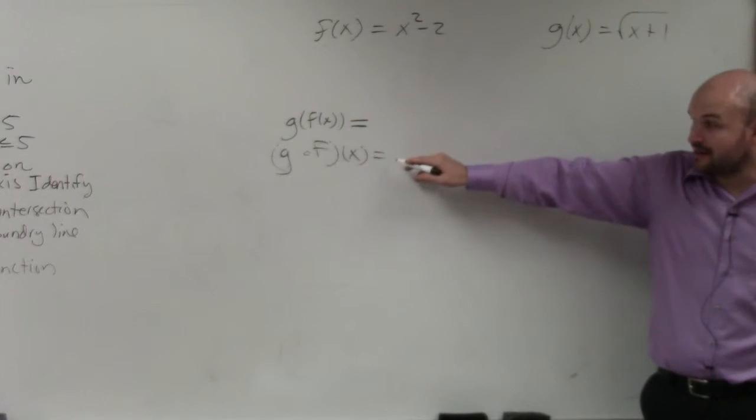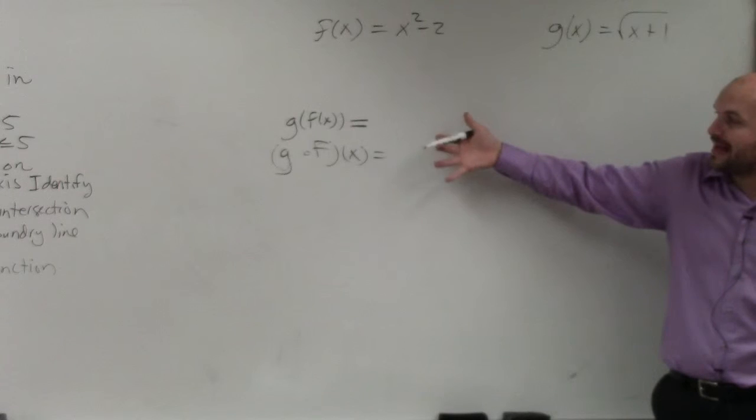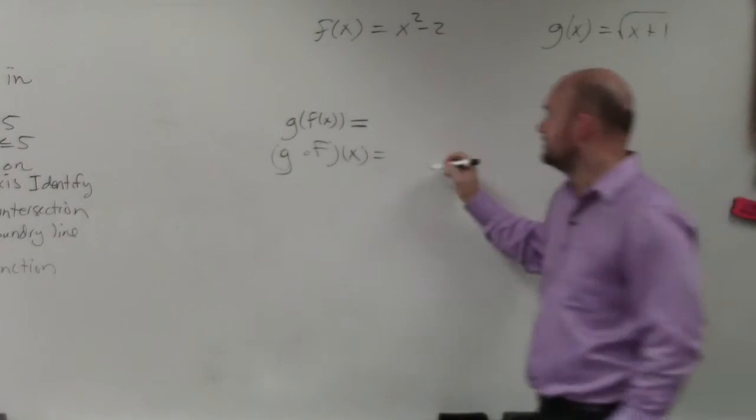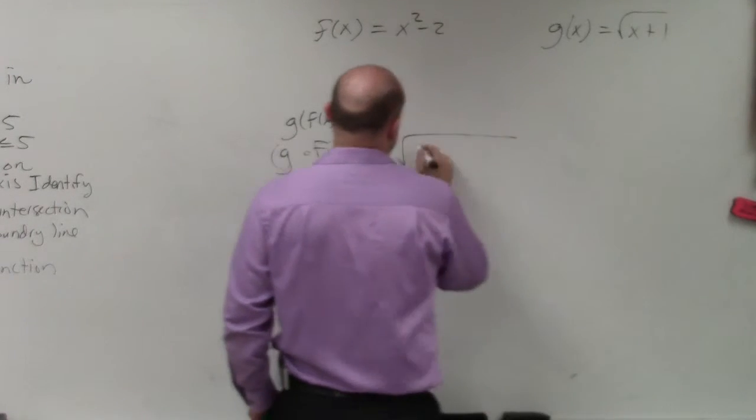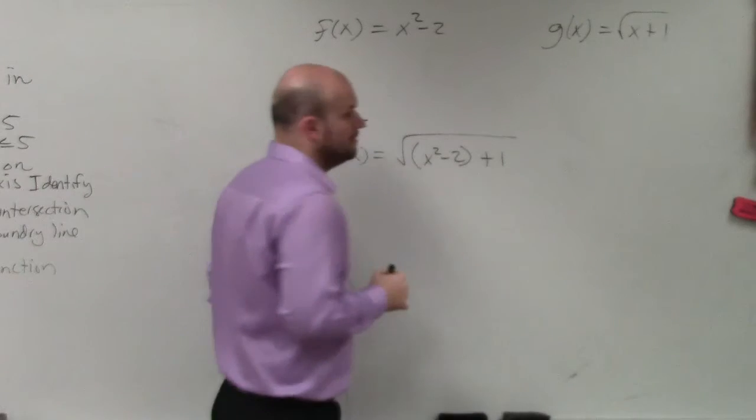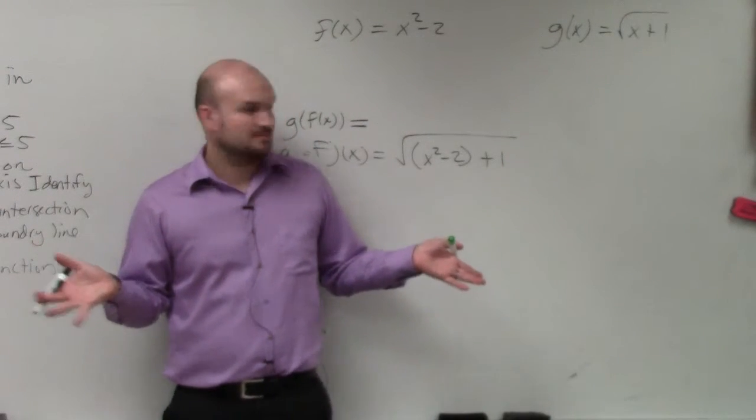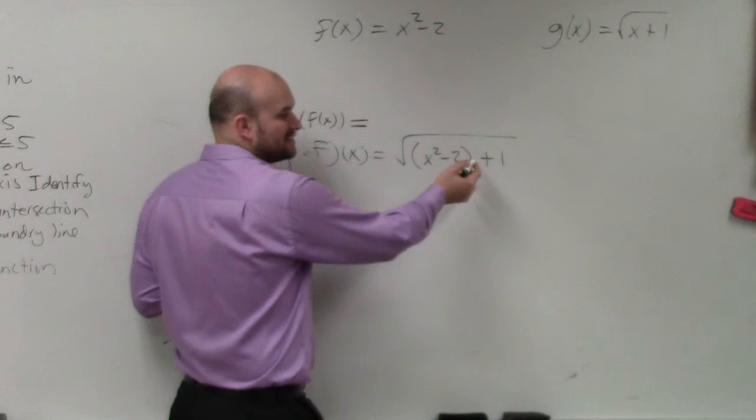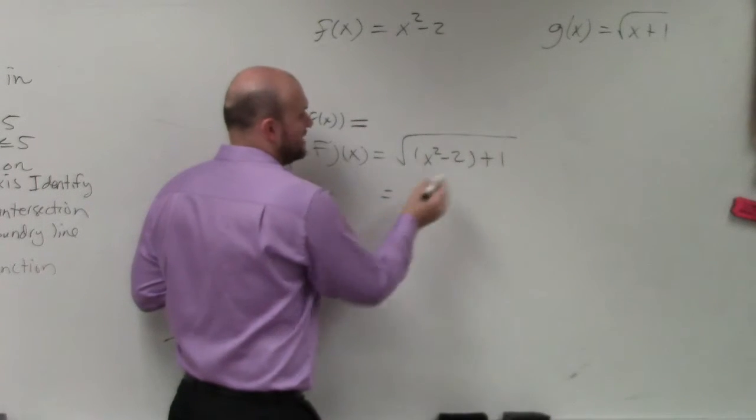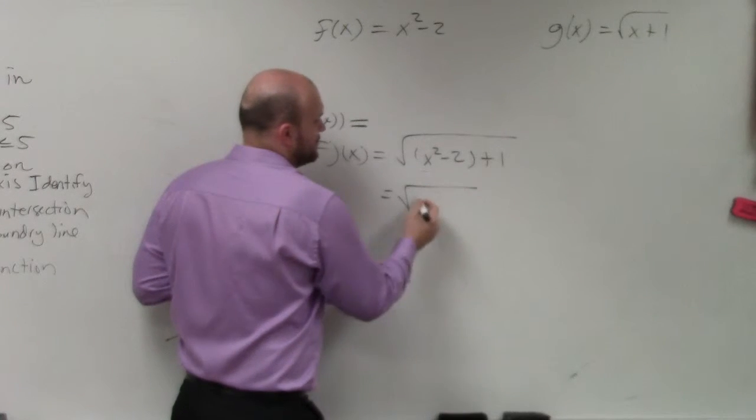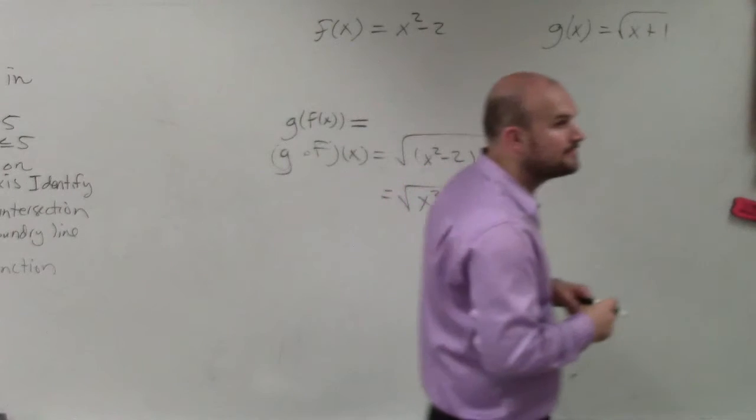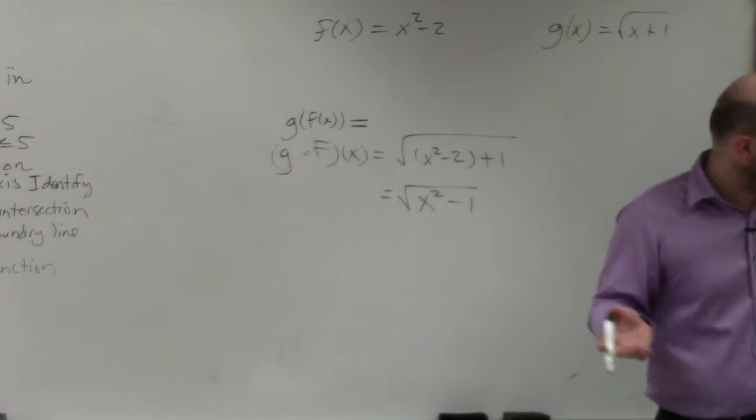So if you have g of f of x, now we're plugging in f of x. So here's my f of x. I'm going to plug that in for x in my g of x function. I'm not going to use color code this time. Does everybody follow? Now, I don't really need parentheses. Let's just simplify it. I can just combine these. Square root of x squared minus 1. Now, they're asking us for the domain.